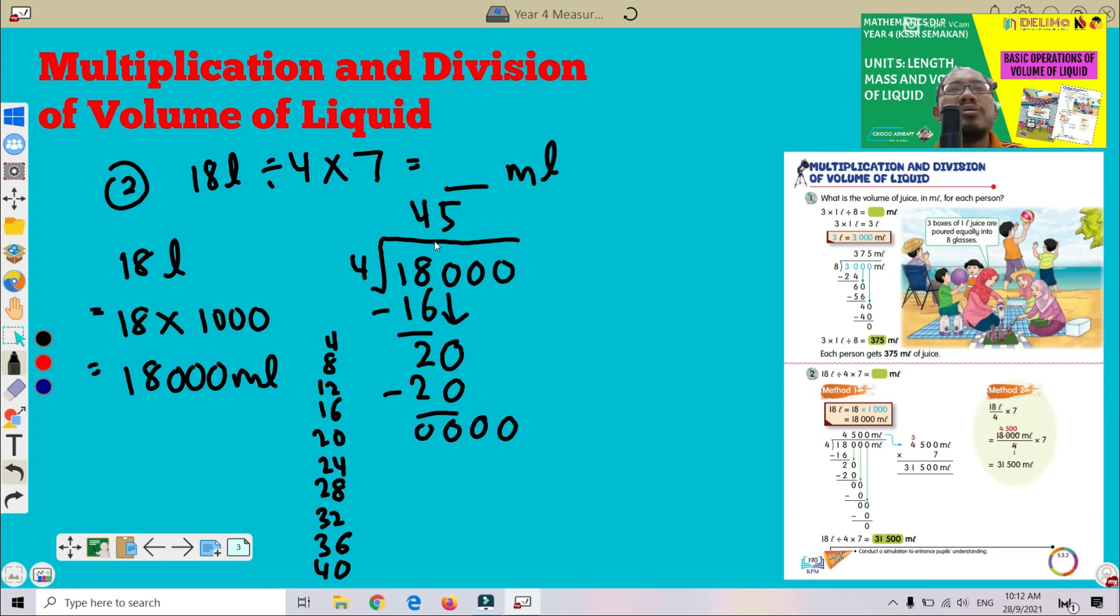This one also 0, you don't need to write, you don't need to repeat the process. Just write down 0 here. So now we got 4,500 milliliter.